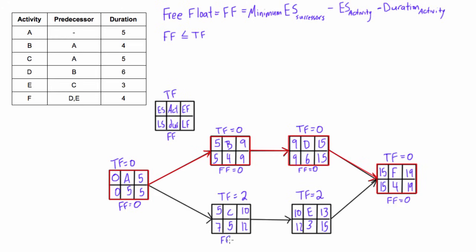For activity C: 10 minus 5 minus 5 gives a free float of zero. For activity E: 15 minus 10 minus 3 gives a free float of two.